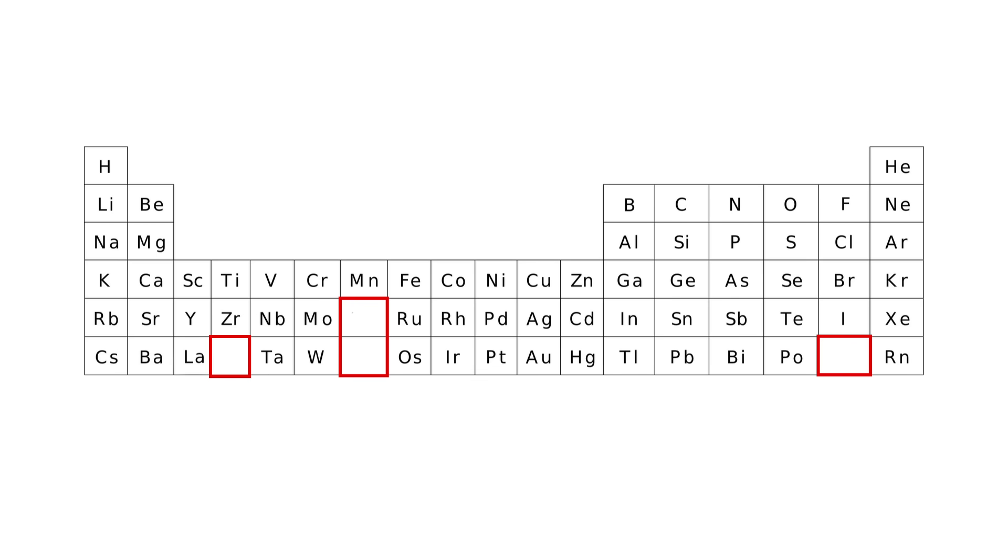With the gaps in the table, Mendeleev said there must be elements that go in these spots, and he predicted some of their properties. Eventually these elements were discovered with the properties precisely as expected.